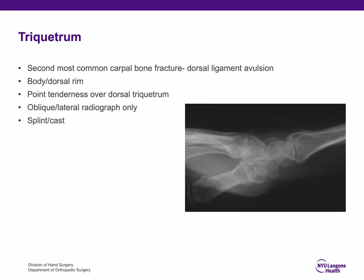It's somewhat hard to see on the lateral x-ray because of all the overlap, but if you look closely dorsal to the dorsal aspect of the lunate, you'll see what seems to be an avulsion fracture. When correlated with physical examination of dorsal triquetral tenderness, the treatment is splinting or casting until the patient is asymptomatic. This rarely requires any surgical treatment.